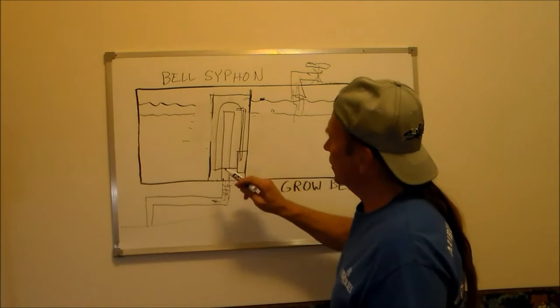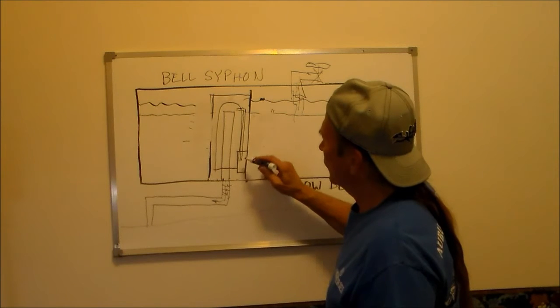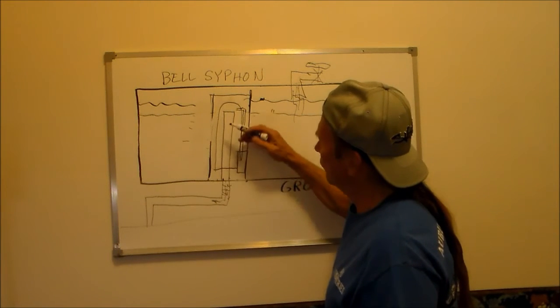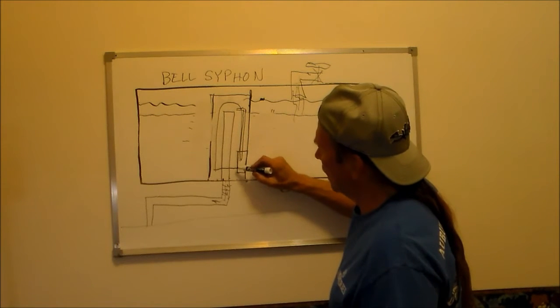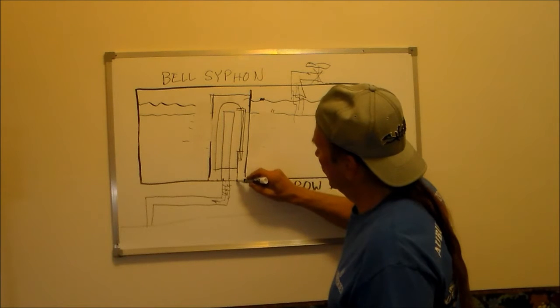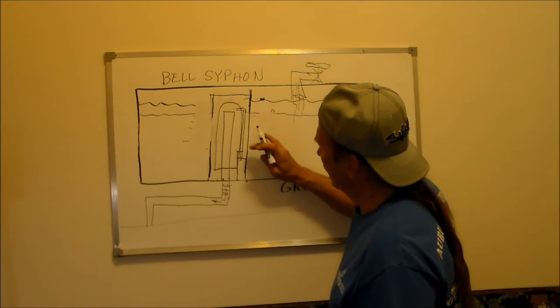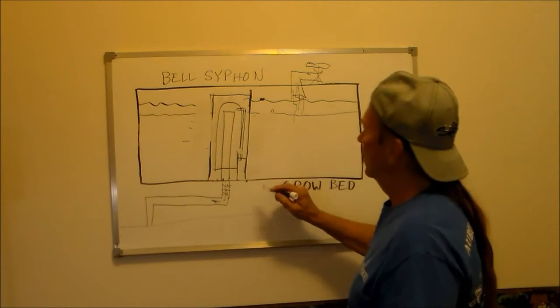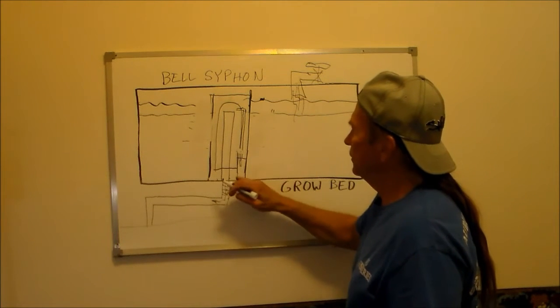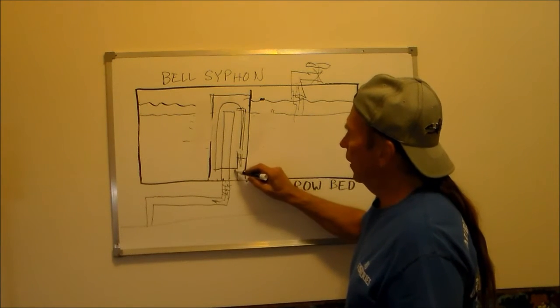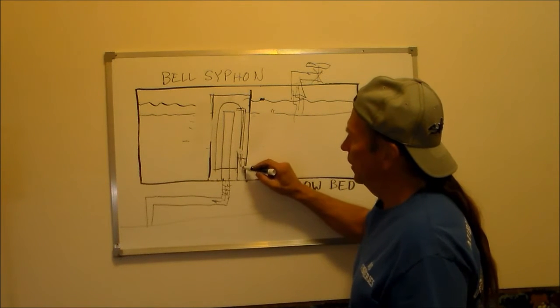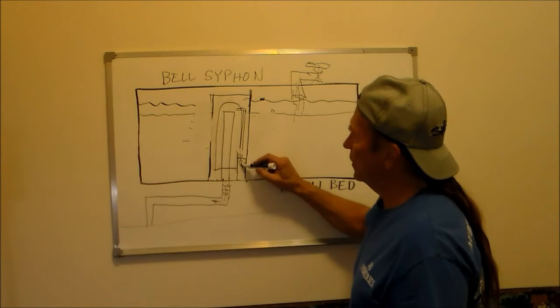So what happens to break the siphon is, as it's siphoning this out and the water level comes down, this will be sitting down here at the lower level. As the water starts to suck air, it will suck the water out of this little cup, and it will suck air up into this tube.